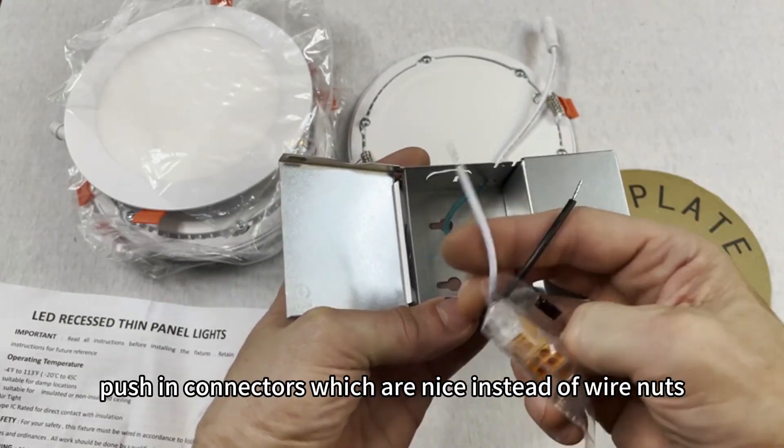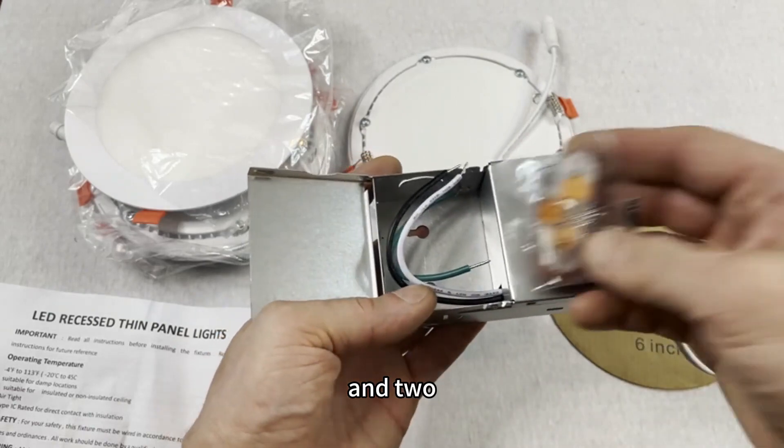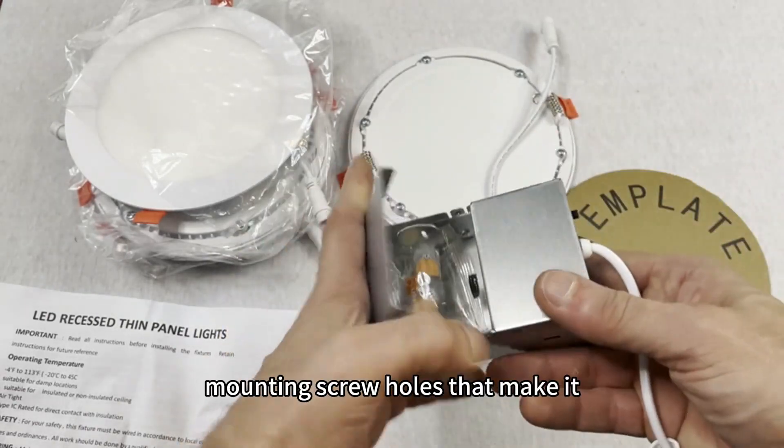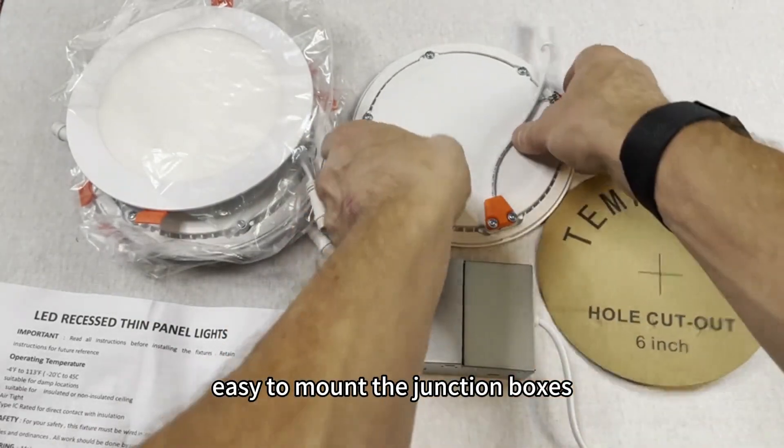Push-in connectors, which are nice instead of wire nuts, and two mounting screw holes that make it easy to mount the junction boxes.